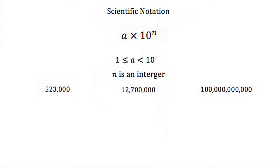So again the way to write scientific notation is that it's some number times 10 to some power, and this number a has got to be between 1 and 10, and this n is an integer.